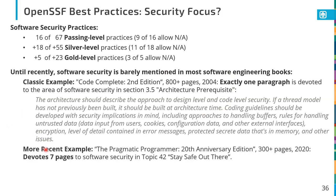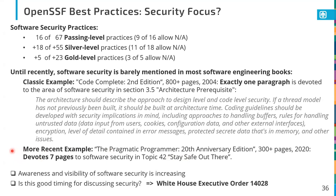More recently, I got a copy of The Pragmatic Programmer — one of the two most recommended books on software engineering. In the 20th anniversary edition from 2020, that 300-page book actually devotes seven pages to the topic of software security under the topic 'Stay Safe Out There.' The awareness and visibility of software security is definitely increasing, as you can see in the literature and in different programs pushing on this, as well as in things like White House Executive Order 14028 on software security.